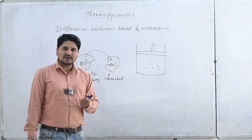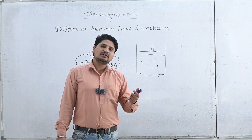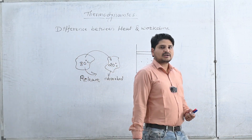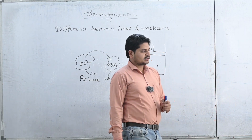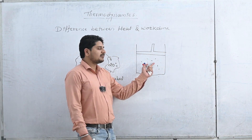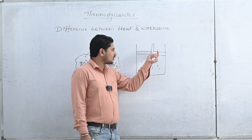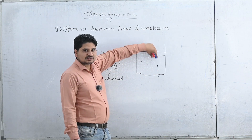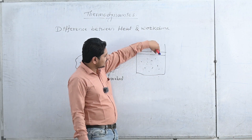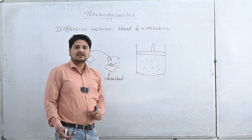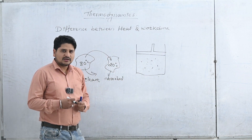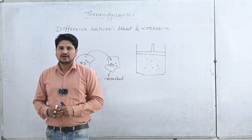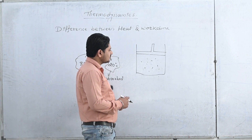The internal energy of the system depends on temperature — it is a temperature-dependent function. When the temperature increases, the internal energy increases. If you compress the piston from outside, the pressure increases in the gas molecules, the temperature increases, and the gas molecules move in random directions.